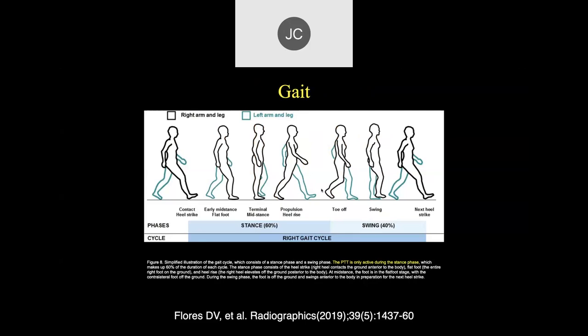Looking at the gait mechanism, it goes through a number of phases: heel strike, mid-foot stance, terminal stance, propulsion with heel rise, toe off, then the swing phase, then the next heel strike. The stance stage — where you're actually standing on the foot — is about 60% of the cycle. The swing stage is about 40%. The mid stance is where we start getting a lot of our pathology.